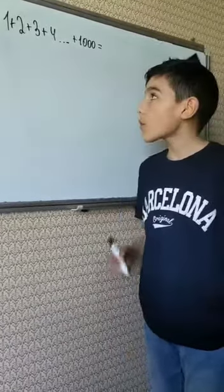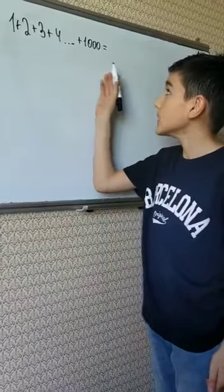How do you think? What will be the sum of all numbers from 1 to 1000?